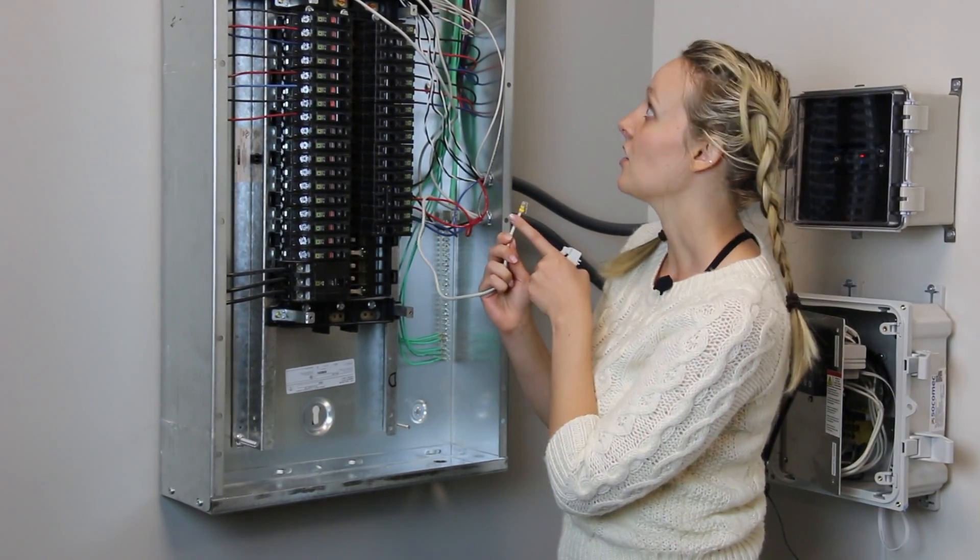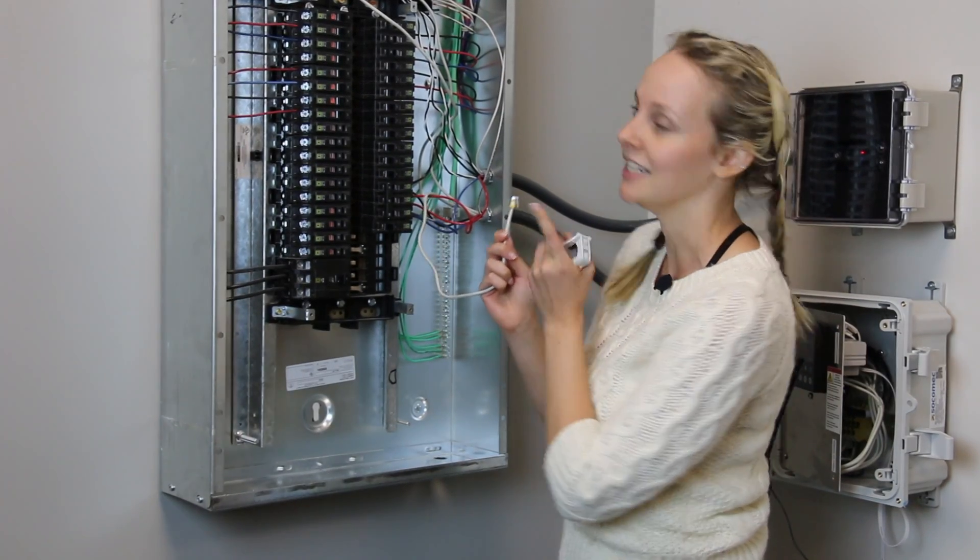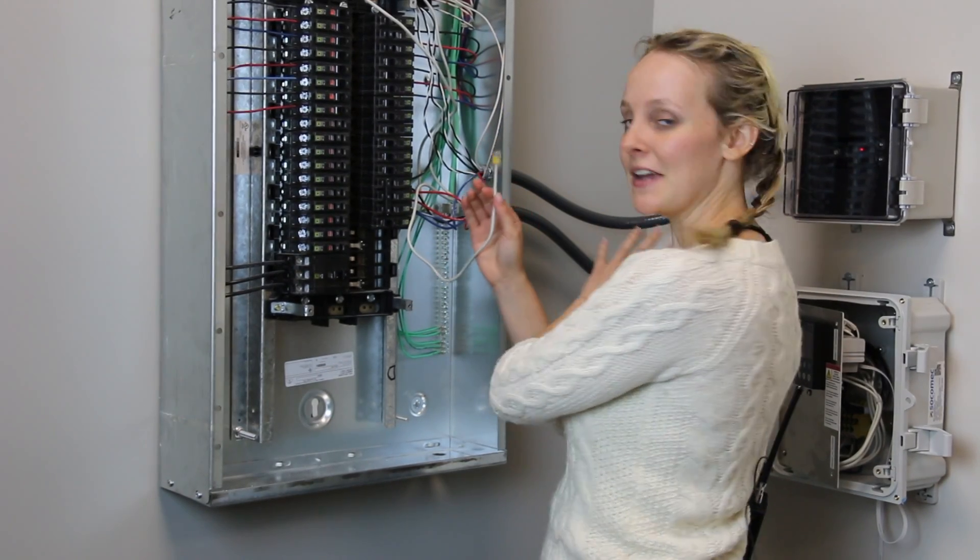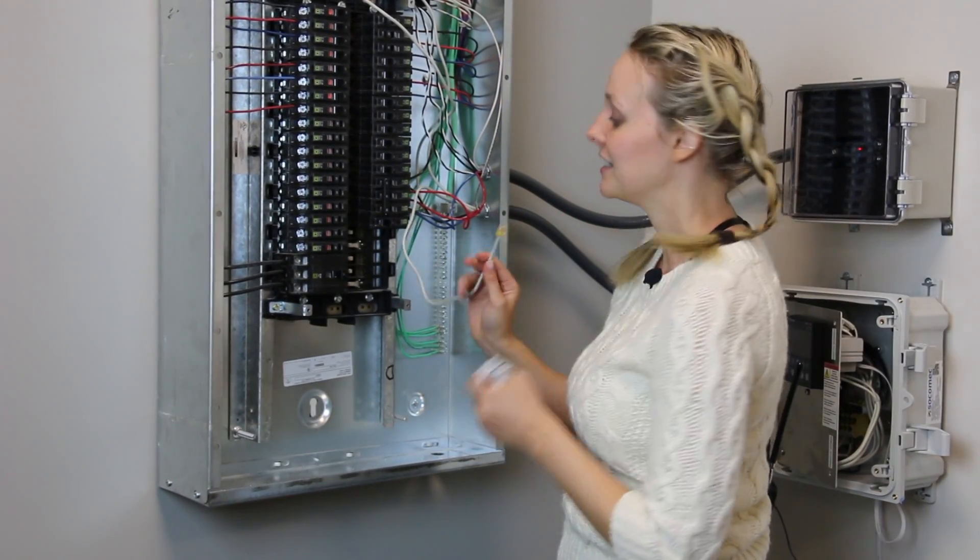Another great thing about these is the wires all come color-coded, which makes it easy to track which CT you're plugging into, which area of your meter, and make sure you don't make any mistakes there.